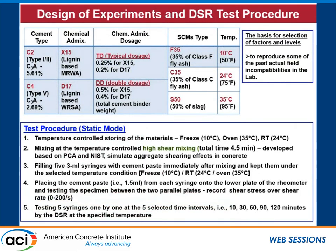This is the design of the experiment. We used two types of cement with varying C3A content. The main purpose was to reproduce some past actual field incompatibilities in the lab, based on suggestions provided by the DOT. We used a lignin-based water-reducing admixture with two different sources at typical dose and double dose, along with Class F fly ash, Class C fly ash, and slag. Temperature is also very important — the DOT noticed that some mixes work fine at normal temperature, but the same mix becomes incompatible at low temperature. In static mode, all materials are stored at the test temperature, then mixed using the temperature-controlled high shear mixing procedure that takes around 4.5 minutes.